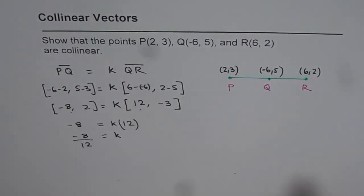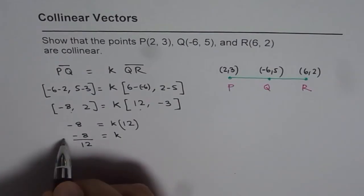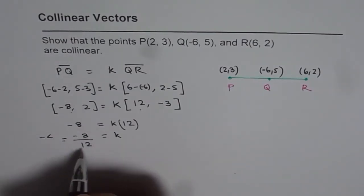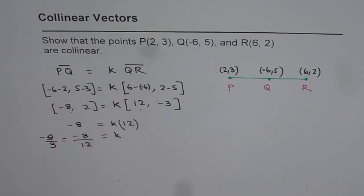So that means K is equals to, both can be divided by 4. So we get minus 4 times 2 over 4 times 3. So K is minus 2 over 3.